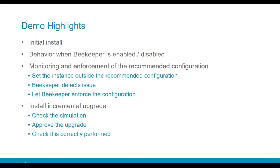Now we're going to go through a pre-recorded demo for additional smoothness. Before doing that, I want to highlight the concepts we're going to see throughout the demo. We'll start with an initial installation of CloudBees Jenkins Team — it's really easy to perform — and we'll highlight the differences between Jenkins and CloudBees Jenkins Team. When the instance is installed, we'll show some of the differences in behavior when Beekeeper is enabled and disabled. We recommend that you always keep Beekeeper enabled, but there's always the escape hatch option.